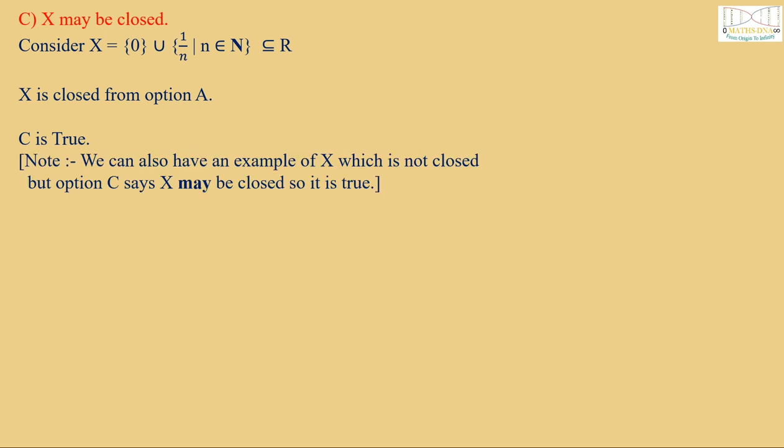Option C says X may be closed. Same example, X = {0} ∪ {1/n | n ∈ N} ⊂ R. X is closed from option A. Therefore, C is true. We need to note here that we can also have an example of X which is not closed. But option C says X may be closed. So, it is true.